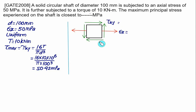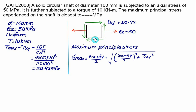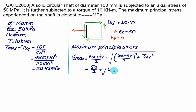In this two-dimensional stress state, tau-xy equals 50.92 MPa and sigma-x equals 50 MPa. No stress acts along the y-direction, so sigma-y equals 0. Maximum principal stress equals sigma-x plus sigma-y divided by 2, plus the square root of (sigma-x minus sigma-y divided by 2) squared plus tau-xy squared, giving sigma-x equals 50 divided by 2 plus the square root of (50 divided by 2) squared plus 50.92 squared. The maximum principal stress equals 81.73 MPa.